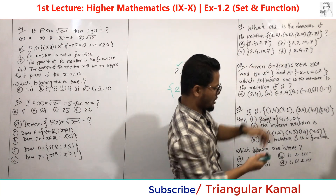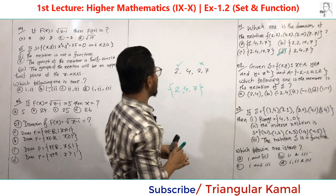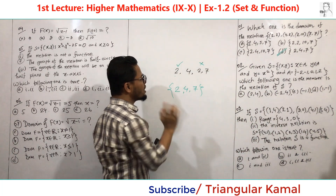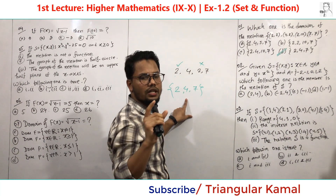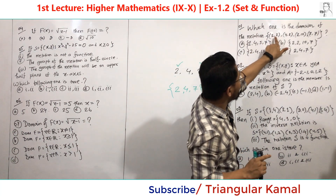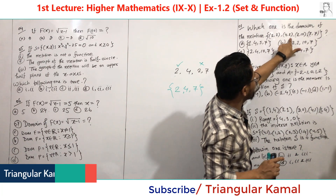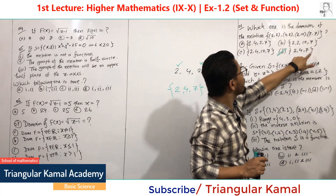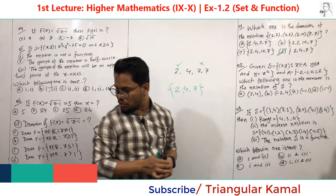So the answer is option D. If any element is repeated, we count it only once — no missing, no repeats. The first elements always form the domain of a relation or function. The relation's elements are (2,2), (4,2), (2,10), (7,7), so the domain is {2, 4, 7}.